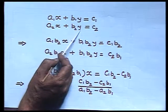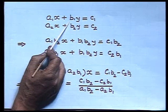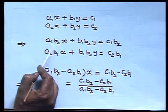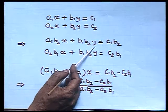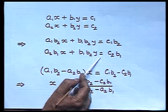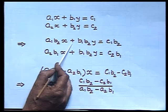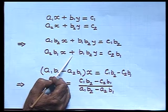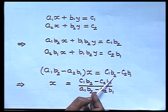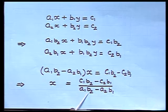To solve for x first, I eliminate y by making the coefficients of y equal. Multiplying the first equation by b₂ and the second by b₁: the first becomes a₁b₂x plus b₁b₂y equals c₁b₂ and the second becomes a₂b₁x plus b₁b₂y equals c₂b₁. Both have coefficient b₁b₂ for y with the same sign, so I subtract. This gives (a₁b₂ minus a₂b₁)x equals c₁b₂ minus c₂b₁, so x equals (c₁b₂ minus c₂b₁) divided by (a₁b₂ minus a₂b₁).